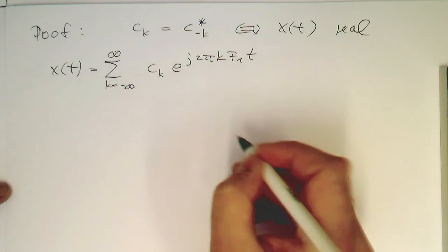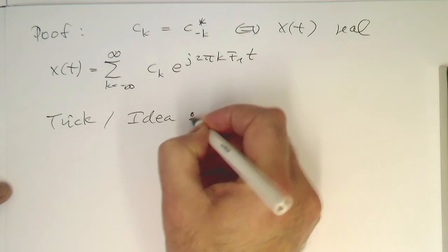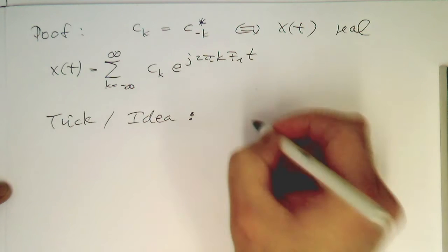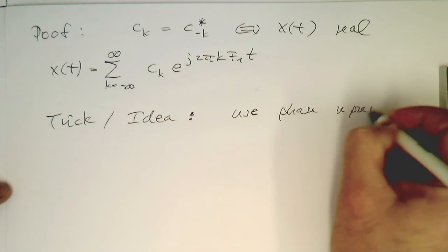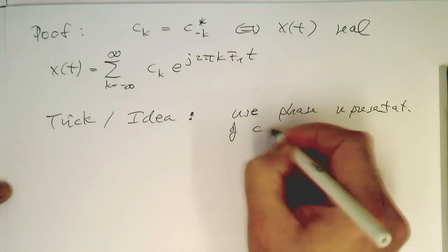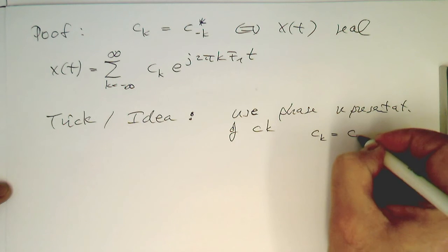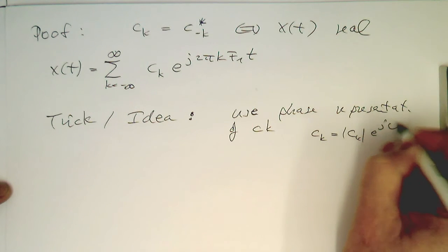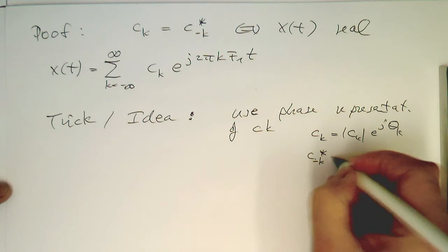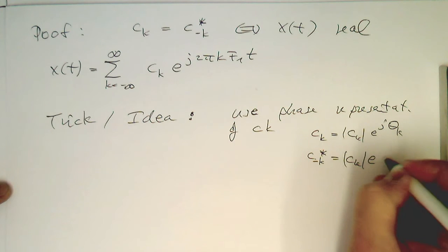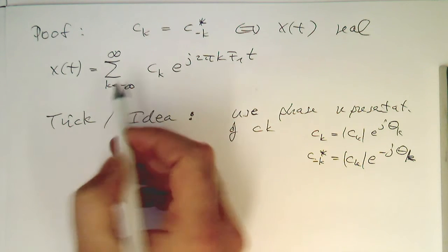So the trick is now, or the idea, because there's always a trick or an idea in these proofs, is we use the phasor representation of ck. So we know that we can write down ck also as |ck| e^{j phi_k}. And we also know that our c_{-k} star, that this is |ck| e^{-j phi_k}.